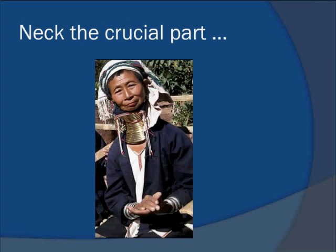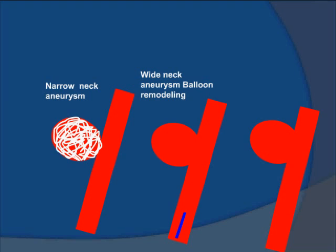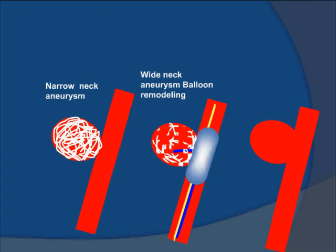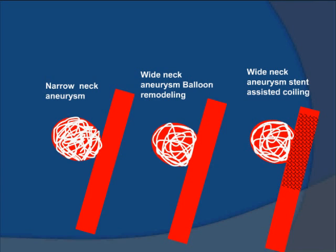Let's understand the neck and why it is important. These are three different types of aneurysm: a narrow neck and two wide neck aneurysms. A narrow neck is easy to treat, but in a wide neck aneurysm the coils will prolapse out. What we do is place a balloon, specifically made for this purpose, inflate it during coiling, then deflate — and the coils remain within the aneurysm. In an unruptured aneurysm we would prefer to use stents for coiling, as the stent acts like a scaffold, modifies the neck, and changes flow dynamics to promote better healing.